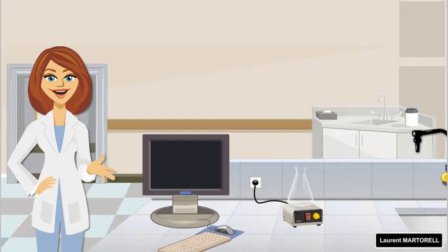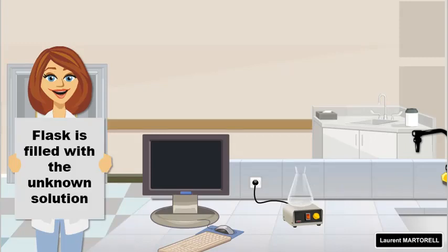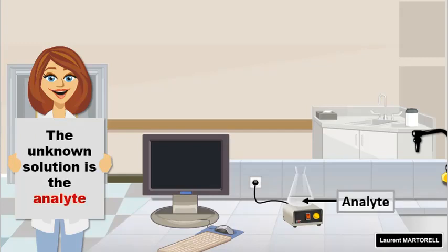Then, you need a conical flask which is placed onto the magnetic stirrer. A stir rod is placed in the flask. A known volume of the solution being investigated is added to the conical flask. This solution of unknown concentration is called the analyte.